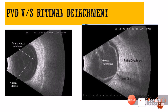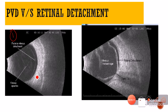Now let us see on B-scan how we differentiate between a PVD and a retinal detachment. The first picture shows a case of posterior vitreous detachment — we can see a faint line of low reflectivity, and this faint line is nothing but the posterior vitreous detachment. This is a complete PVD because we are not seeing any attachment of this PVD to the disc.